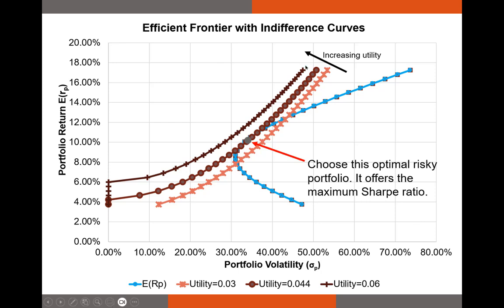Utility functions allow us to plot what you're seeing right now. What you're looking at is our mean variance frontier in blue from the last video. I've also plotted what we call indifference curves — these are plottings of every point where a person has the exact same utility. For example, a portfolio return of 14% and volatility of 40% gives the same utility of 0.06 as a portfolio offering an 8% return and 20% volatility. You always want to get as close to the top left as possible, which indicates more utility.